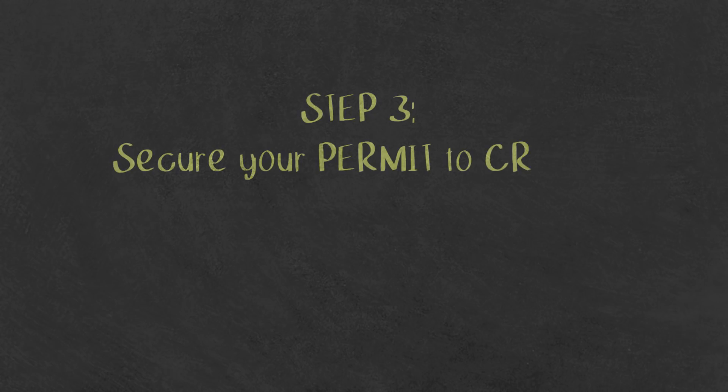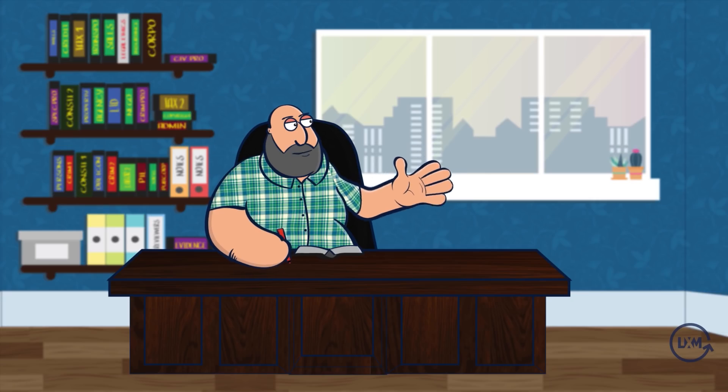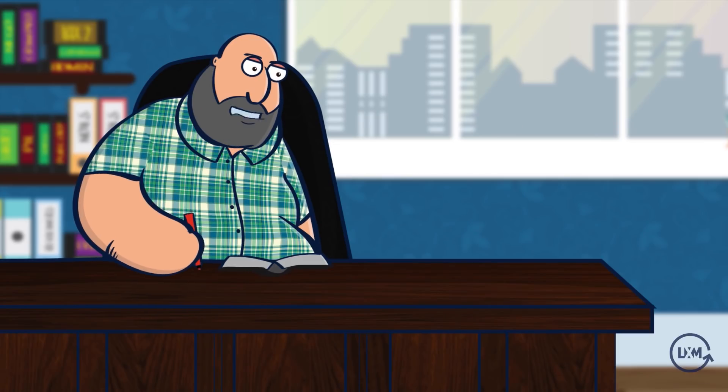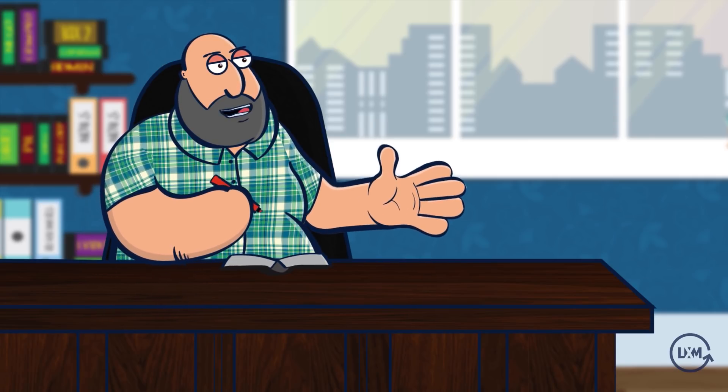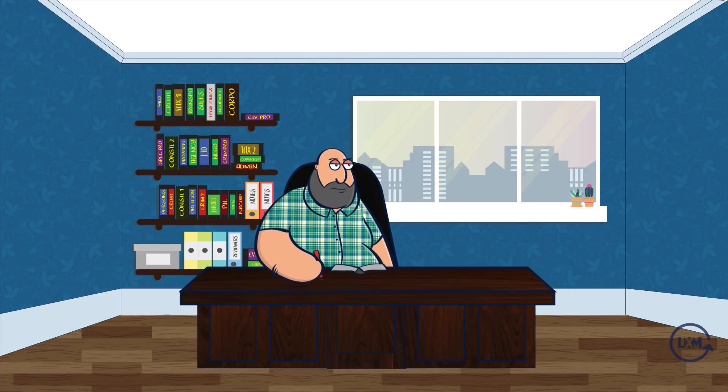Step 3: Secure your permit to cross-enroll. The permit to cross-enroll is a piece of paper from your registrar signed by the dean's office, giving you the authority to enroll in a subject at another school. During your stay in law school, your dean holds power over your academic requirements. Bonus tip: don't line up during summer class registration. The best time to get this is one month before final exams so you can enroll for the summer. The permit is usually valid for one semester, and the fee is very minimal.